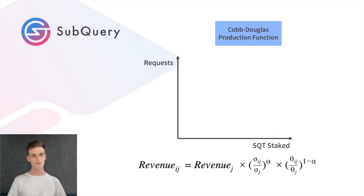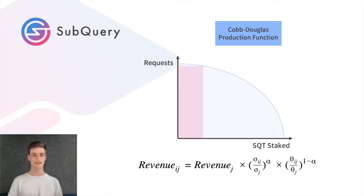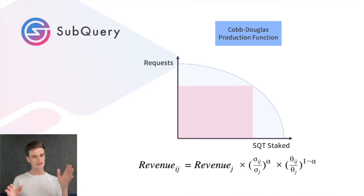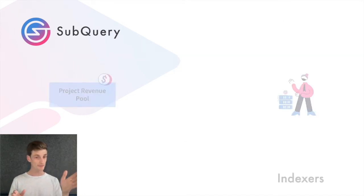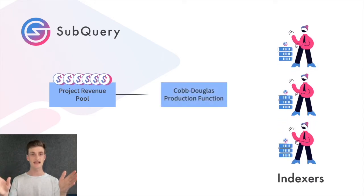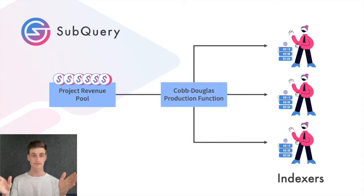In our view, the beauty of this equation is that a rational indexer must maintain a high level of staked SubQuery tokens, relative to the work that they've done, in order to receive optimal rewards. So, indexers are incentivised both to do as much work as possible and to maintain as much stake as possible to maximise their rewards.